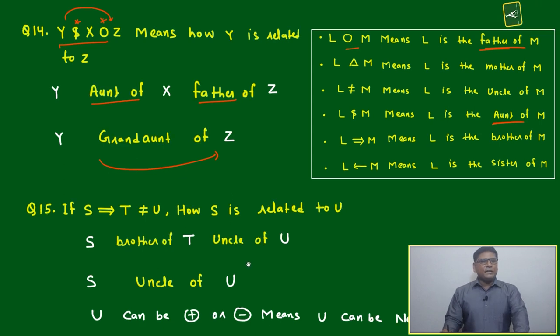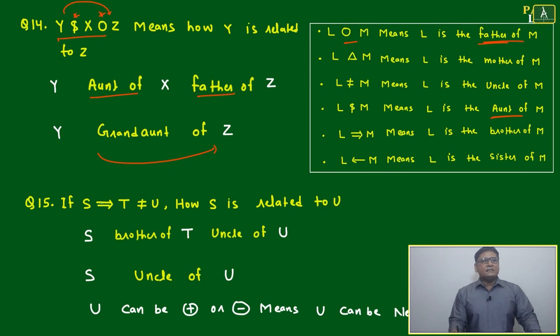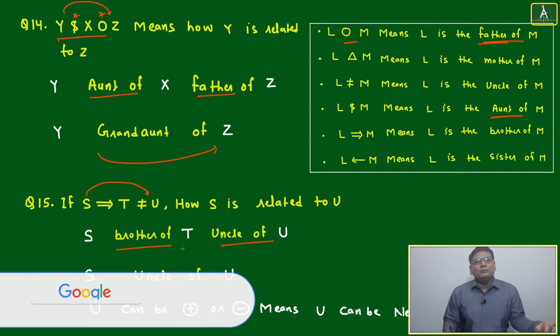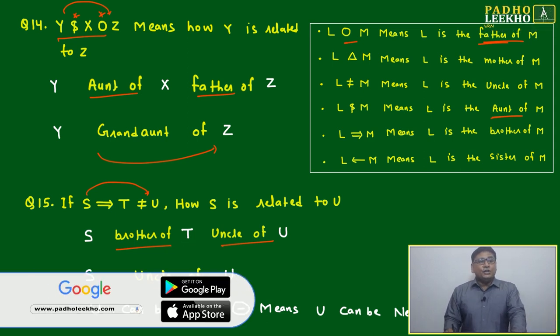Question 15: If S single-headed arrow T and T is not equal to U, how S is related to U? Just copy paste. S brother of T, uncle of U. S and T are brothers and U is uncle of T, means S will be automatically brother or uncle of U also. If U is uncle of T and S is brother of S, then automatically U will be uncle of S also.